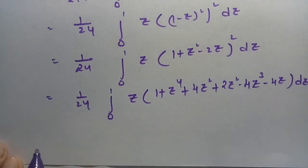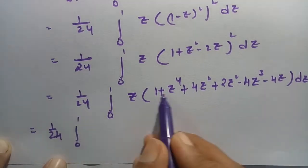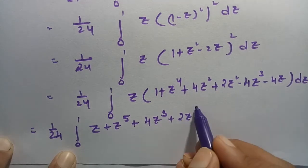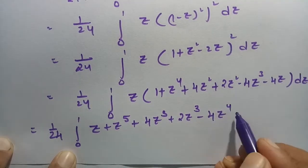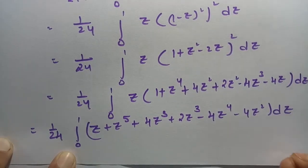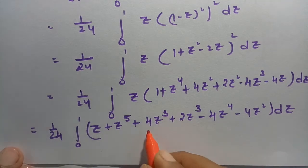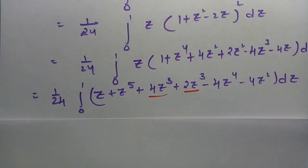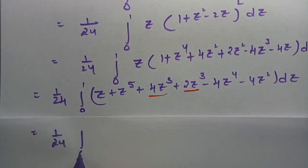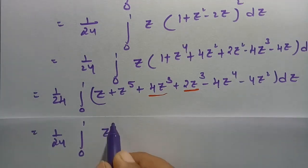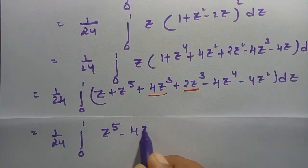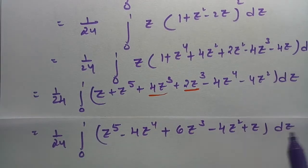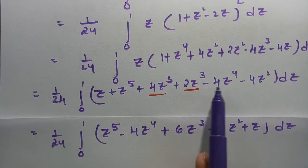Multiplying each and every term with z: this is 1/24 times integral 0 to 1 of (z + z to the power 5 + 4z cubed + 2z cubed minus 4z to the power 4 minus 4z squared) dz. Combining the like terms 4z cubed and 2z cubed gives 6z cubed, so we have 1/24 times integral 0 to 1 of (z to the power 5 minus 4z to the power 4 plus 6z cubed minus 4z squared + z) dz.